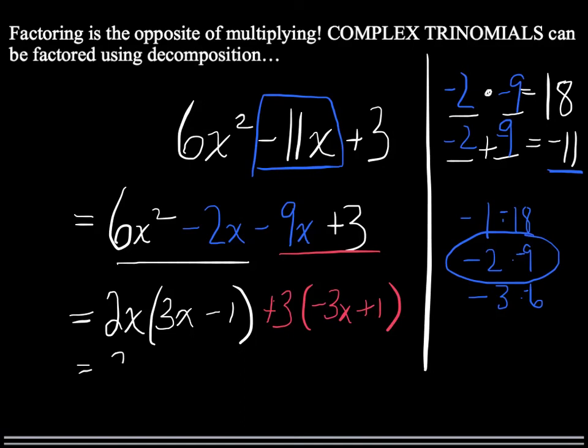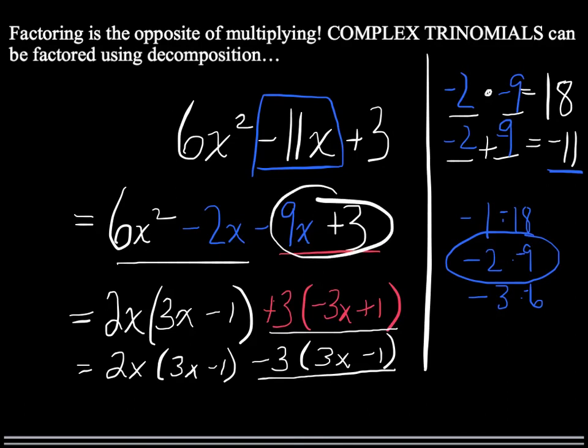So I could actually rewrite this as 2x times (3x - 1) and -3 times (3x - 1). And if you multiply 3 times (-3x + 1) or -3 times (3x - 1), you'll see that they're in fact exactly the same thing. And in fact they're exactly -9x + 3.